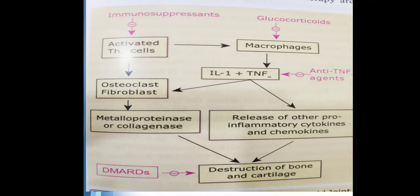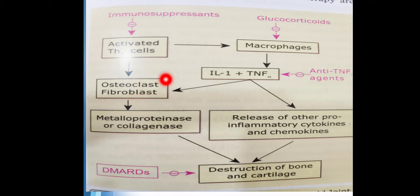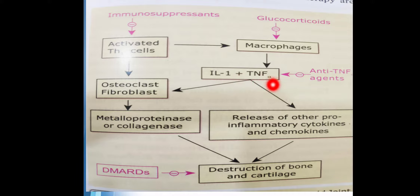As we saw in the video, activated TH1 cells activate macrophages, osteoclasts, and fibroblasts. Once TH cells are activated, macrophages are activated and further release inflammatory markers — interleukin-1 and TNF-alpha — leading to release of pro-inflammatory cytokines and chemokines.